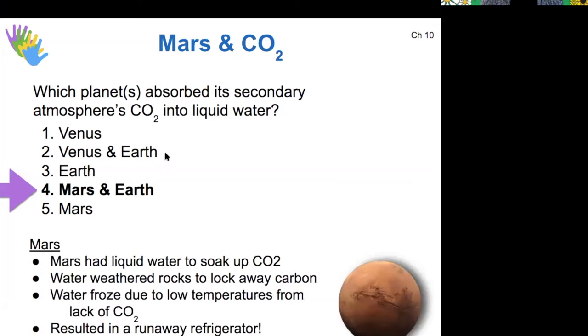For Mars, it did have liquid water at one point, so that could have soaked up some of its CO2 and definitely would have resulted in surface weathering to lock carbon into the rocks. So both of those pathways for CO2 through water and then through water into rock could have happened on the surface of Mars when it had liquid water on its surface. But now that it doesn't have liquid water on its surface anymore, and it's all frozen because of low temperatures, it has a runaway refrigerator effect and no longer has a mechanism to soak up any more CO2.